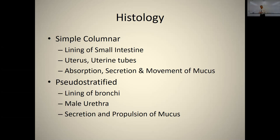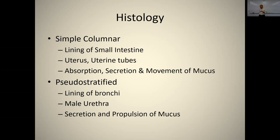Often along with simple columnar cells there are unicellular glands called mucous glands. Pseudostratified epithelium lines the bronchi and part of the male urethra. Pseudostratified is responsible for secretion and propulsion of mucus. It usually has cilia as well. We'll talk about how this mucus is moved along by cilia when we get to the lungs.